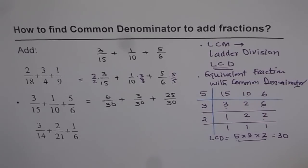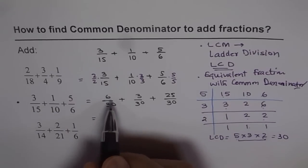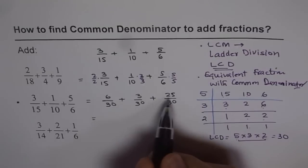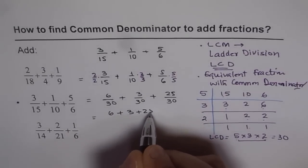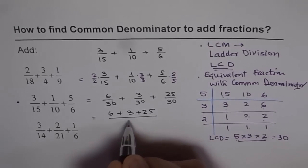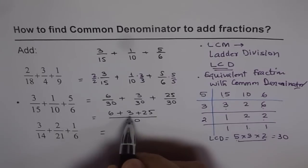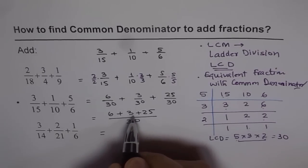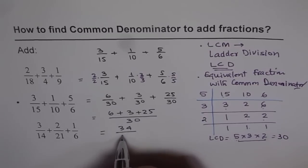Now since we have common denominator, we can add the numerators. So numerator is 6 plus 3 plus 25. So let me write 6 plus 3 plus 25 is in the numerator and the common denominator is 30 for us. So we can write this as 6 plus 3 is 9 and 9 plus 25 is 34. So we get 34 over 30.